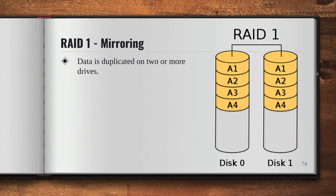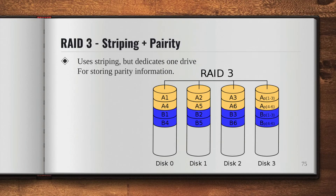We also have RAID 2, which basically uses striping across the disks but with some disks that store error checking information. RAID 2 has no advantage over RAID 3, so it's no longer used. Moving on to RAID 3: RAID 3 uses striping, but it dedicates one drive for storing parity information. So as you can see, the data is striped across disk 0, disk 1, and disk 2 — A1 through A6, then B1 through B6 — just like RAID 0. However, there is an additional drive used to store parity information, which means equality information about those three disks. So from A1 to A3 is stored in one parity block, A4 to A6 in another, then B1 to B3 and B4 to B6 similarly.